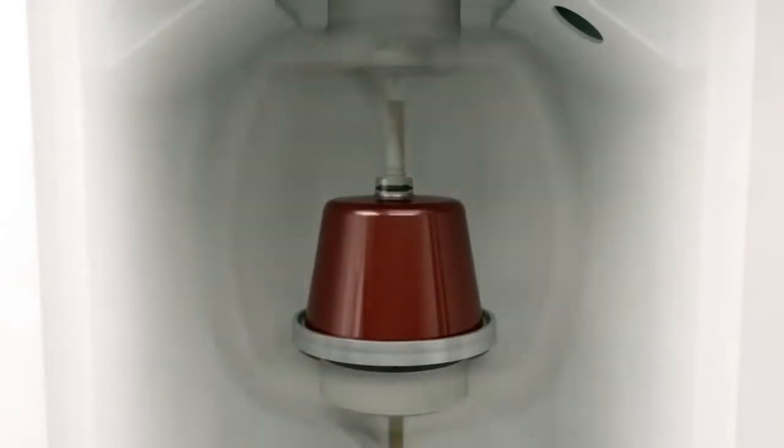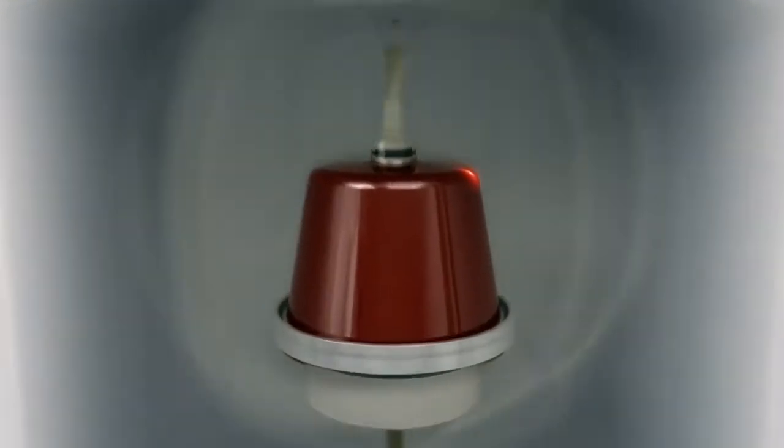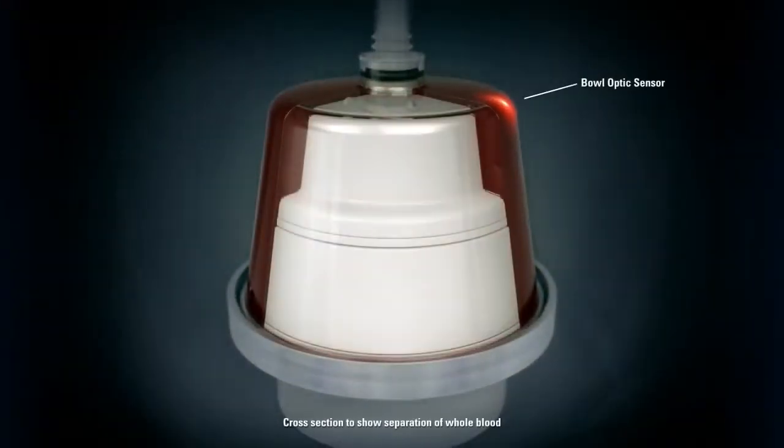The constant spinning of the centrifuge allows for clean separation of the different cell types. Bowl optic sensor technology detects the RBC plasma interface as it approaches the top of the bowl and continuously monitors the interface as the buffy coat fraction expands.